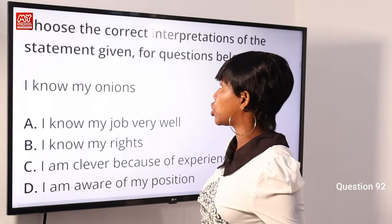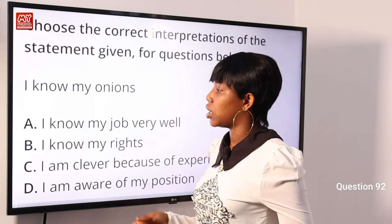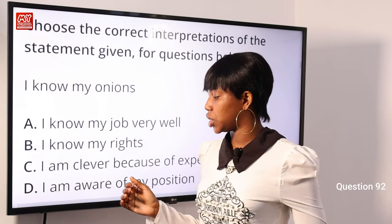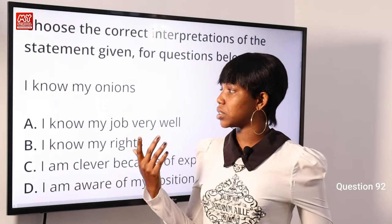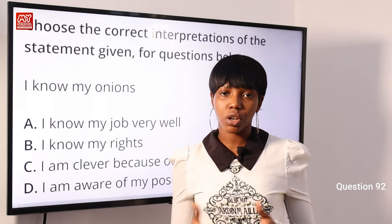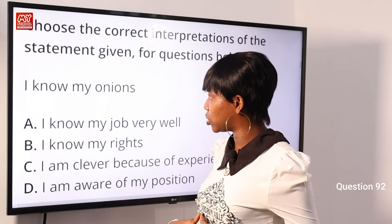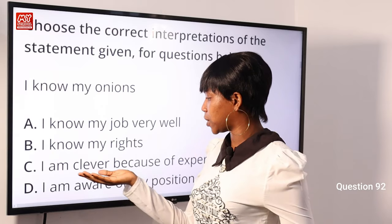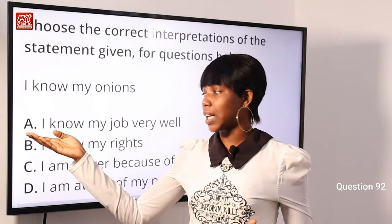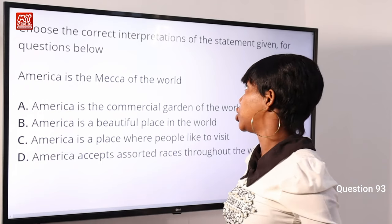Question 92: Choose the correct interpretation of the statement: 'I know my onions.' Options: A) I know my job very well, B) I know my rights, C) I am clever because of experience, D) I am aware of my position. To 'know your onions' means to know a great deal about a particular subject, field, or role. Options B and D do not interpret the idiom well. Option C is not specific to a role. Option A) 'I know my job very well' is the correct answer.